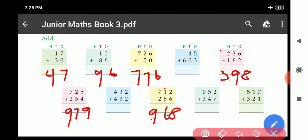7 plus 2, 9. 5 plus 4, 9. 6 plus 3, 9. So answer for this part is 9, 9, 9. Like this we will do the remaining parts.